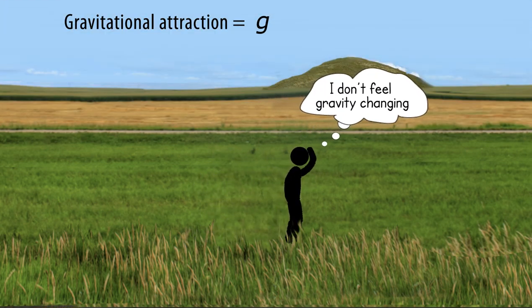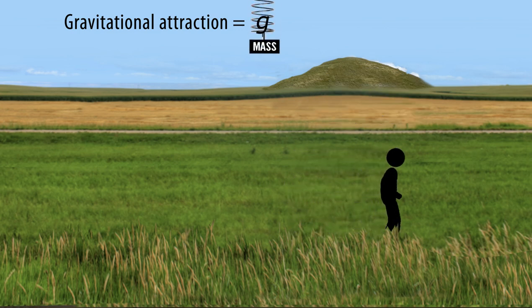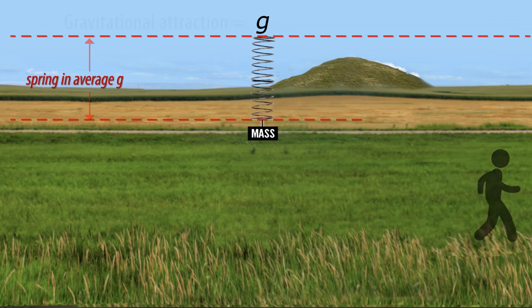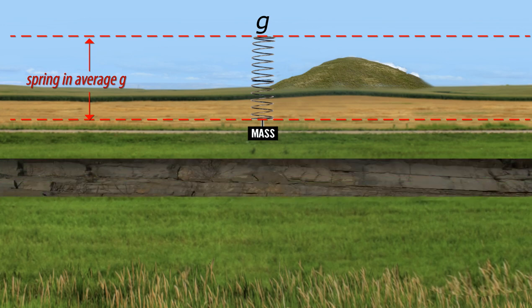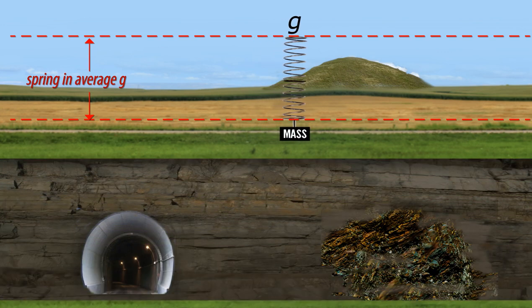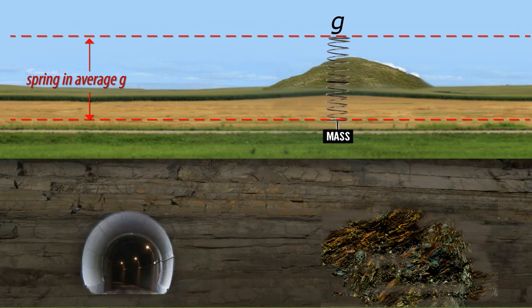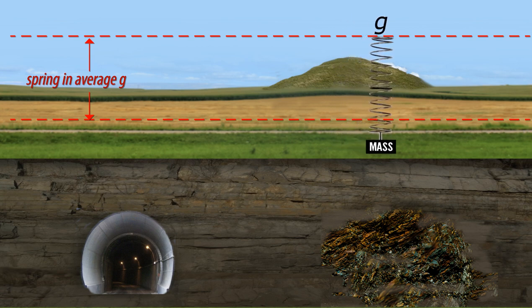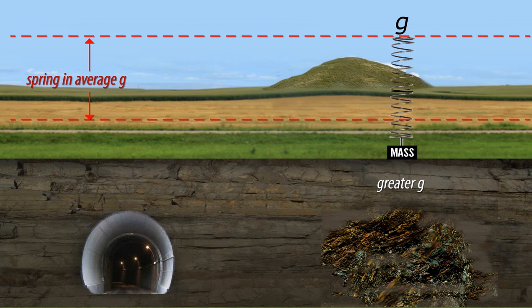Differences in the gravitational acceleration from one location to the next are tiny, so we don't feel them as we move around on the surface of the Earth. We use a large spring here to exaggerate the differences — a longer spring equals greater g. Looking below the surface, we see that the denser or larger an extra mass below the surface is, the greater the local g will be. It also means that g will be greatest closest to, or right over, a denser mass, like an ore body.